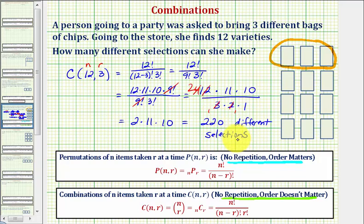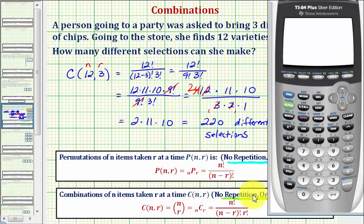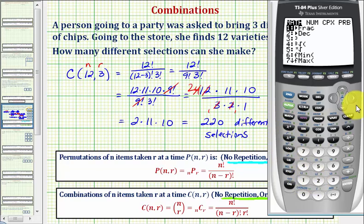But before we go, I also want to show how we can find this combination on the graphing calculator. And the graphing calculator uses this notation here. So we first enter n, which is twelve. Press math, right arrow to probability. And notice that combination is option three.